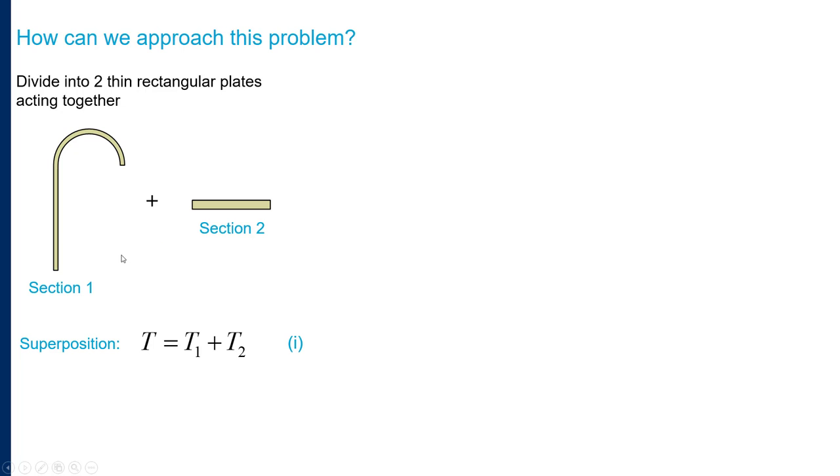Now when we analyze these separately we also have to keep in mind how they act together. The torques superimpose but we also have a compatibility condition. Because these have to deform together, our angle of twist 𝜃 for the entire section must be the same as the angle of twist of section 1 and section 2. We'll call this equation II.